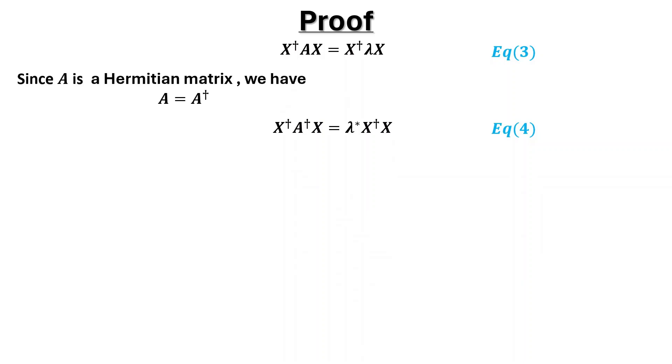Since A is a Hermitian matrix, we have A is equal to A dagger. So we replace A dagger in equation 4 by A and we have new equation, equation 5.